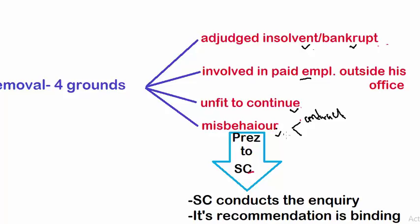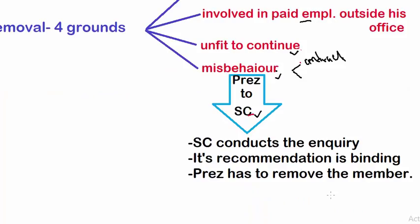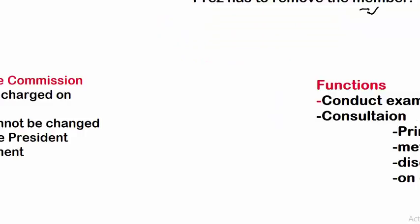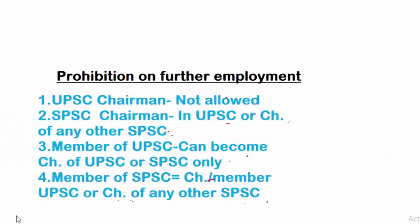Misbehavior is defined in the Constitution in two ways: first, the member is interested in a government contract, and second, getting benefit from that contract. Any monetary benefits are considered misbehavior. In this case, the President has to refer the case to the Supreme Court. The Supreme Court then conducts an inquiry, and if the claims are found true, it recommends removal to the President, and that recommendation is binding on the President.